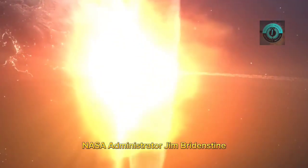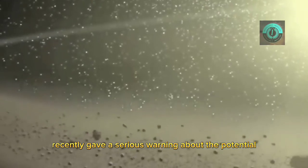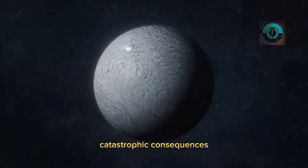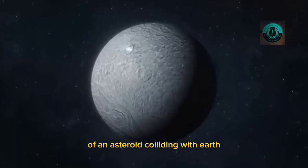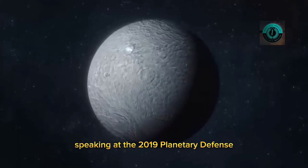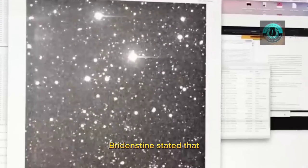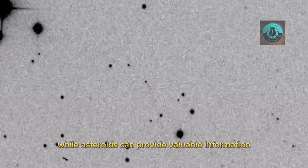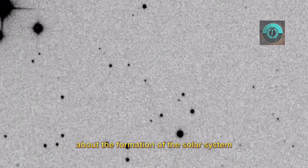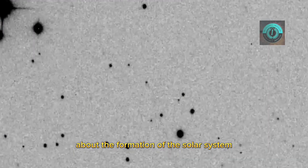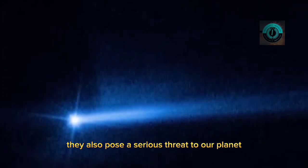NASA Administrator Jim Bridenstine recently gave a serious warning about the potential catastrophic consequences of an asteroid colliding with Earth. Speaking at the 2019 Planetary Defense Conference in Washington, D.C., Bridenstine stated that while asteroids can provide valuable information about the formation of the solar system, they also pose a serious threat to our planet.